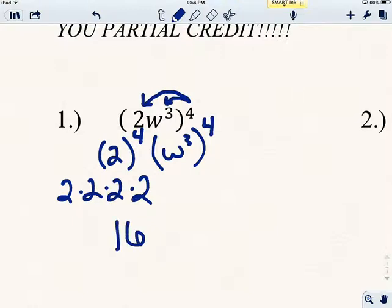And then whenever we have this situation where we've got w to the third raised to the fourth power, we call this a power of a power. And remember that if I have an exponent on the inside of the parentheses and an exponent on the outside of the parentheses, I multiply those two exponents together. Don't punch into your calculator 3 raised to the fourth power. That'll be wrong. Instead, we just multiply 3 times 4, and we get w to the twelfth. So that's our answer, 16w to the twelfth.